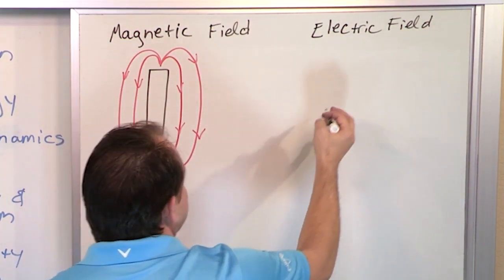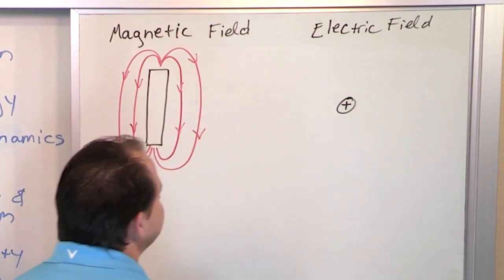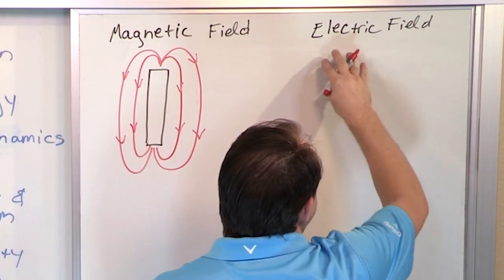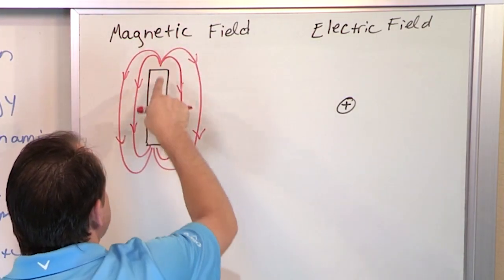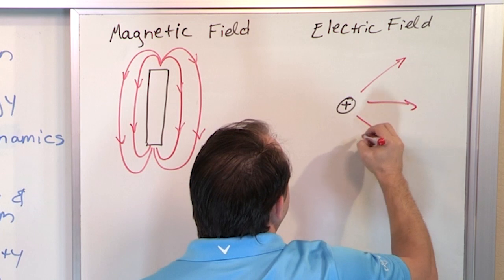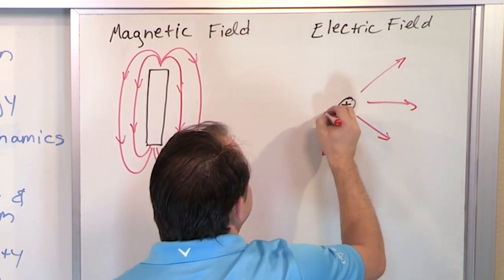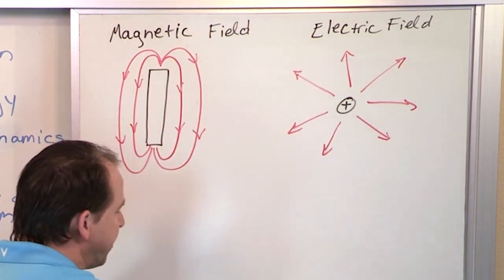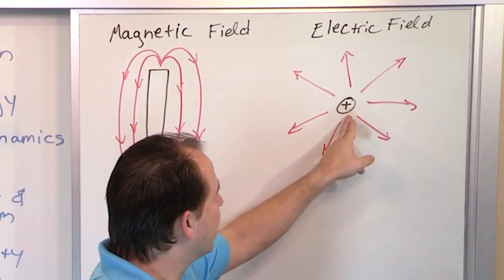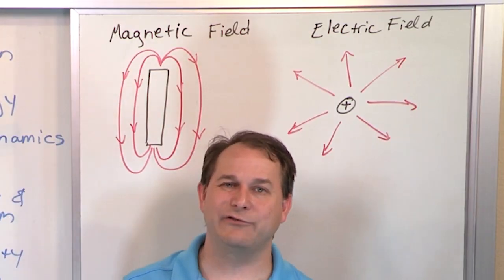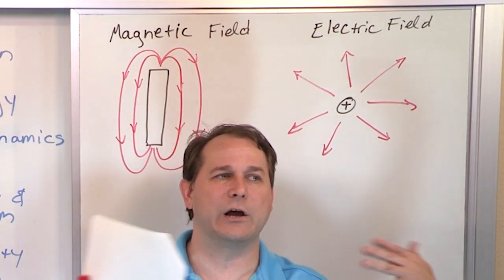So if we have, for instance, a proton with a positive charge there, there's an invisible field that we say surrounds this guy, but it doesn't form these closed loops like this. It forms these radial arrows that emanate from the charged particle. So it works for protons and it also works for any charged particle. So there's an electric field that surrounds an electron also, but it goes the other direction.